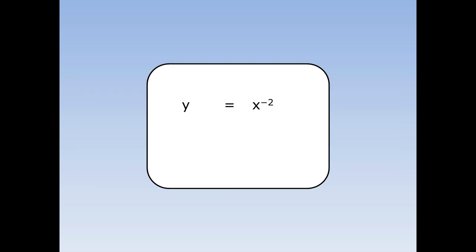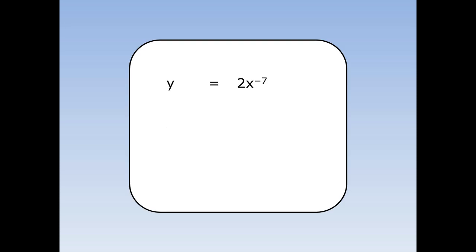If I have negative indices, the rules are exactly the same. The power drops down the front and multiplies, and I take away 1 from the power. Minus 2 drops down the front to multiply, and minus 2 take away 1 is minus 3. If I have a number in front, the rules are still the same. The minus 7 drops down the front to multiply, and minus 7 take away 1 is minus 8. So the gradient dy by dx ends up being minus 14x to the minus 8.